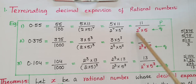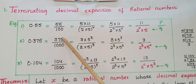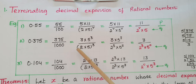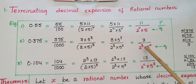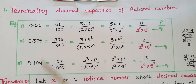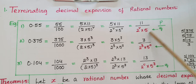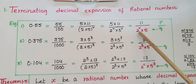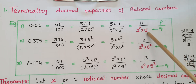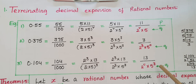Next, 0.375 can be written as 375 by 1000, which equals 3 into 5 cubed by 2 into 5 whole cubed, giving 3 by 2 cubed into 5 to the power of 0. And 0.104 can be written as 13 by 2 to the power of 0 into 5 cubed. If you observe all these numbers, the denominator q is of the form 2 squared into 5, or 2 cubed into 5 to the power of 0, or 2 to the power of 0 into 5 cubed — all in the form 2 to the power of n into 5 to the power of m.